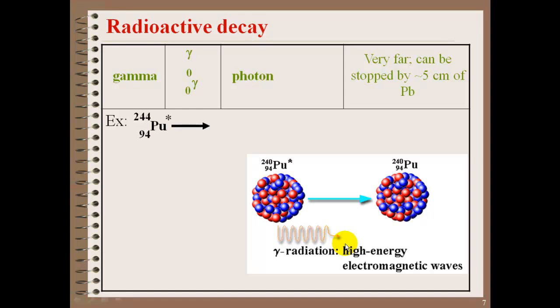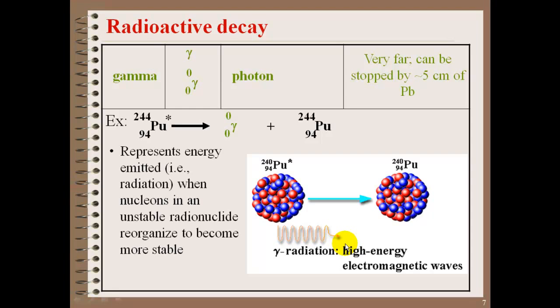Here we have plutonium-244, which goes through a gamma decay. You'll notice that there's no change in the mass, nor is there a change in the number of protons. What ends up happening is the energy that's emitted occurs when the neutrons and protons in the nucleus are unstable, and they have to reorganize and shift themselves to become stable. So in order for them to become stable, remember stability equals a lower energy. Some energy has to be given off from that nucleus in form of a gamma decay, and the nucleus now becomes more stable.